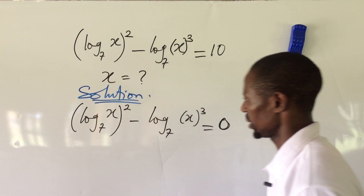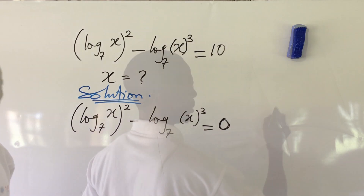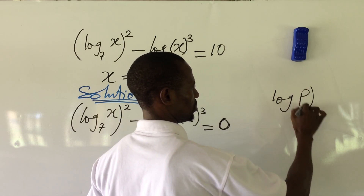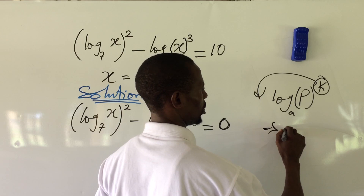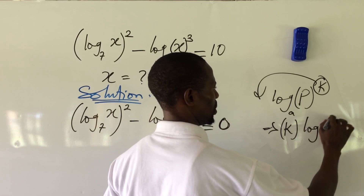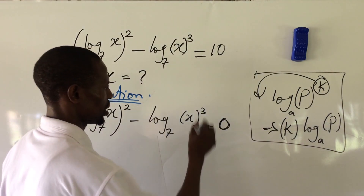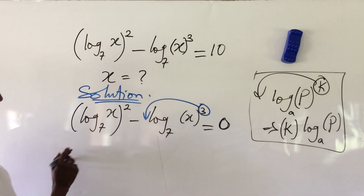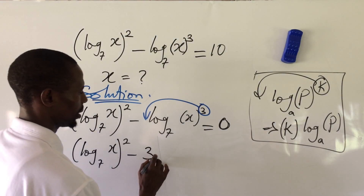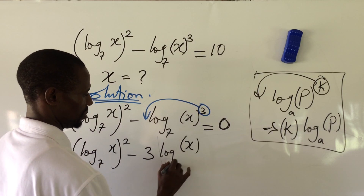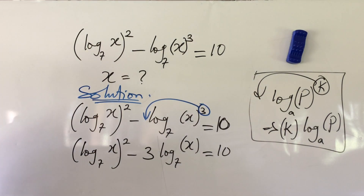We can apply the law of logarithm that says we can move the power backward. If you have log(p) to the power of k, the k moves backward: it becomes k·log(p). Applying this, we rewrite the expression as (log_x(7))² minus 3·log_x(7) equal to 10.